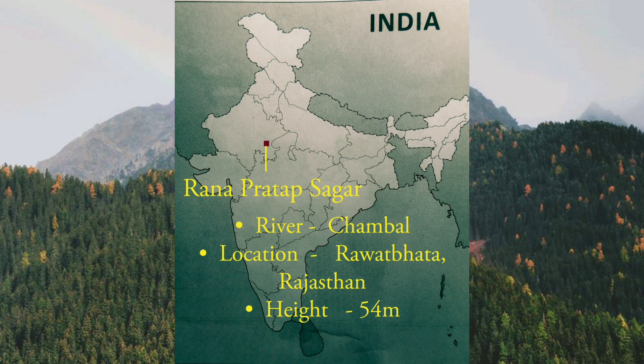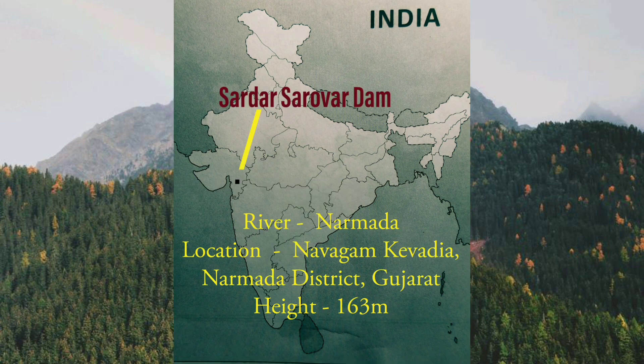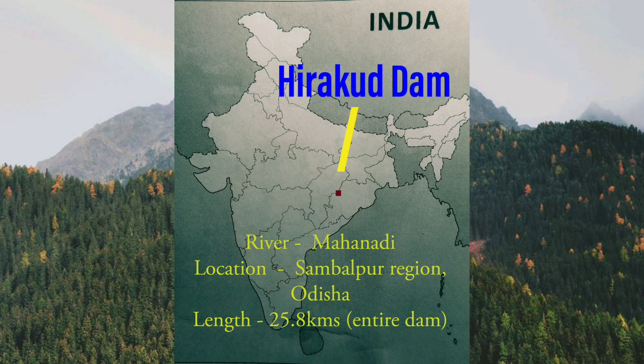Next is Rana Pratap Sagar. It is located on the Chambal River in Rawatbhata, Rajasthan. Its height is 54 meters. Sardar Sarovar Dam is located on the Narmada River in Narmada district, Gujarat. Its height is 163 meters.